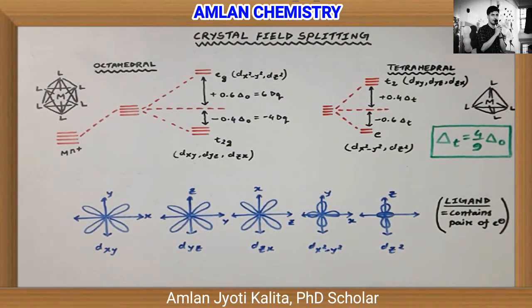In transition metals, the d-orbitals include dxy, dyz, dzx, dx²-y², and dz². The dx²-y² and dz² orbitals lie along the axis, while dxy, dyz, and dzx are between the axes. For example, dxy has lobes between the x and y axes, dyz between y and z axes.